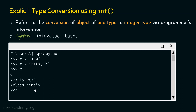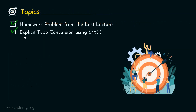This is how explicit type conversion works, especially for int. The int function has the capability to convert an object of one type to integer type, and this is used by the programmer — that is explicit type conversion. We have successfully learned the concept of explicit type conversion using int. Thank you for watching this presentation; I'll see you in the next one.